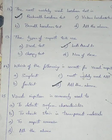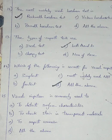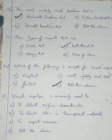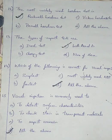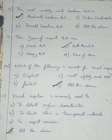Question number 15. Visual inspection is commonly used to: Option A detect surface characteristics, Option B check for stains in transparent materials, Option C inspect corrosion, Option D all the above. While checking, you observe if a surface is good, if there is a stain in a transparent surface, and if there is any corrosion or damage. So I am going with option number D, all the above.